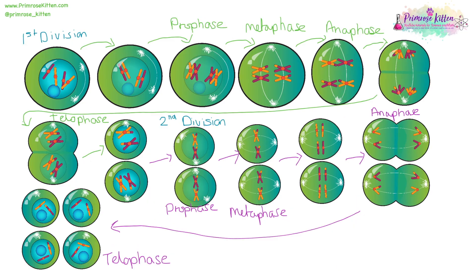In meiosis, we are going to have two divisions. So our chromosomes will line up, they will sort themselves down the middle, there will be a little bit of crossing over going on — they will swap chunks of their chromosome to increase the genetic diversity. They will divide into two, then they will line up and divide into two again. And you'll notice that each of the cells have half of the number of DNA as the parent cell.